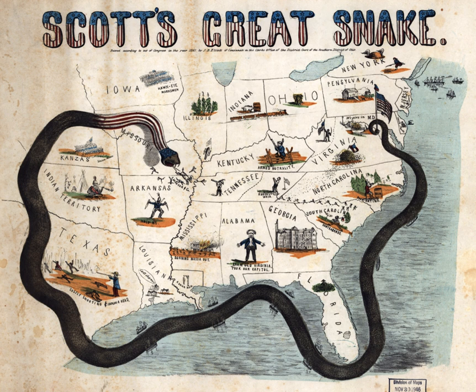The South Atlantic Blockading Squadron was tasked primarily with preventing Confederate ships from supplying troops and with supporting Union troops operating between Cape Henry, Virginia, down to Key West in Florida. It was created when the Atlantic Blockading Squadron was split between the North and South Atlantic Blockading Squadrons on 29 October 1861. After the end of the war, the squadron was merged into the Atlantic Squadron on 25 July 1865.